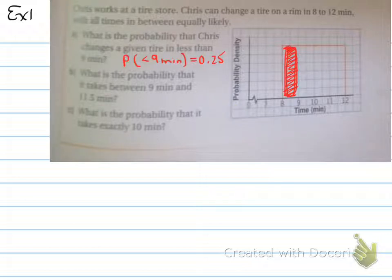So what we can say when we write this out on the actual graph, what we're actually trying to do is we're saying some variable x is less than 9 minutes. So the probability of getting some variable x less than 9 minutes is equal to 0.25. So 25% chance that the tire change will take less than 9 minutes.